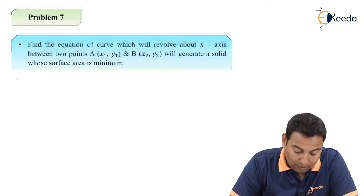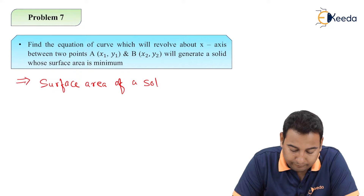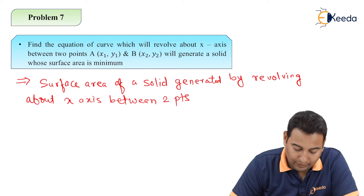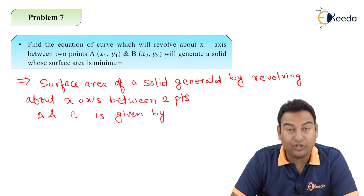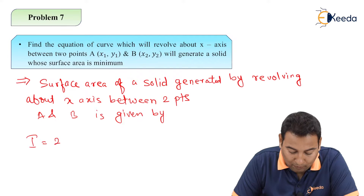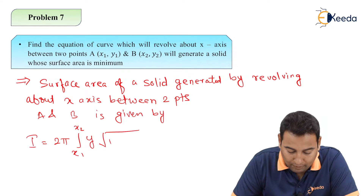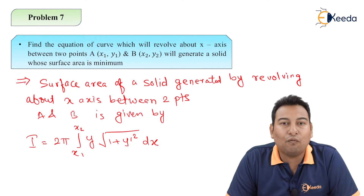Again for this particular problem, same as the last one, you need to remember the equation. The surface area of a solid generated by revolving about x-axis between two points a and b is given by: I is equal to 2π integration from x1 to x2 of y into root of (1 plus y dash square) into dx. You need to remember this equation, then only you can proceed ahead. If you forget this equation, this problem is gone.